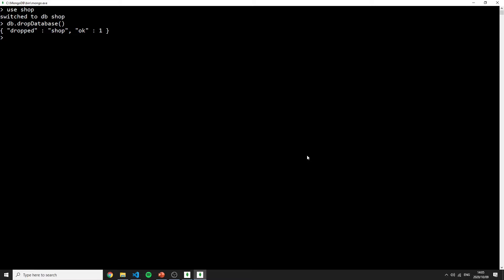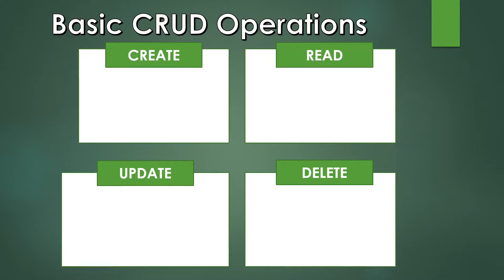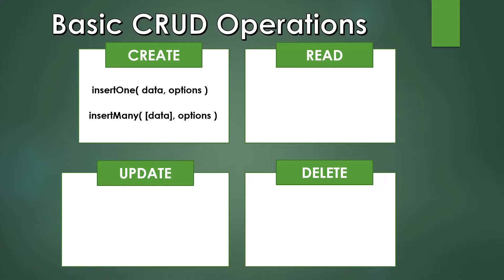Let's go over the most important CRUD operation commands in MongoDB. For creating documents, the two most important commands are 'insertOne' and 'insertMany'. insertOne lets you insert one data object at a time along with some options. insertMany takes an array of data objects plus options.